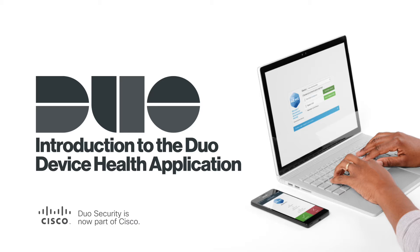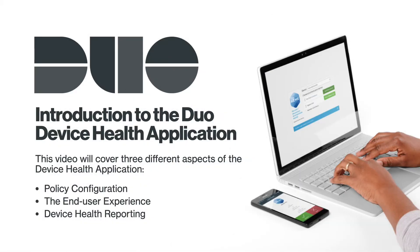The Device Health application helps you control access to your Duo-protected applications through the policy engine by restricting access when devices fail to meet your security requirements. It also empowers your users to proactively keep their devices updated and healthy. This video will cover three different aspects of the Device Health application: policy configuration, the end-user experience including download and installation, and viewing endpoint reporting data in the Duo Admin Panel.